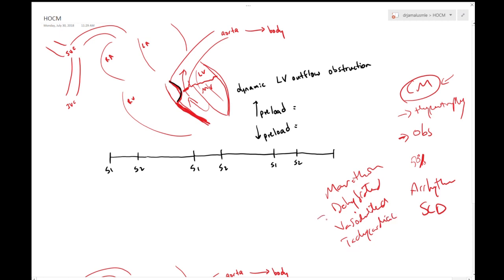So what will happen in those three? If you're dehydrated this means that your preload is low, so your chamber would be less in size than usual and that will increase your obstruction.